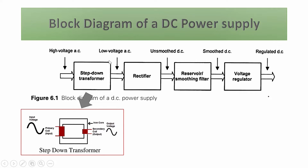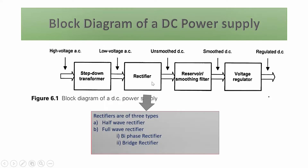This low voltage AC is applied to the next element: the rectifier. Rectifiers are of two types — half-way rectifier and full-way rectifier. Full-way rectifiers are further classified into bi-phase rectifier and bridge rectifier. The differences are in terms of the number of diodes, system complexity, efficiency, and the amount of ripple.